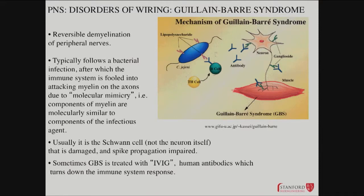Guillain-Barré typically follows a bacterial infection. What's thought to happen is that the immune system is fooled into attacking myelin because of molecular mimicry — there's something on the myelin that looks like something that was on the bacterium, such as lipopolysaccharides, components of its coating. Immune cells become fooled and end up making antibodies that attack neurons and attack myelin — more particularly the Schwann cell, which is the more typical target. You end up with loss of myelin due to damage to the Schwann cell, but the neuron is not dead — it's not even in itself damaged.